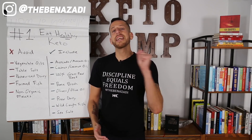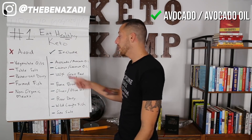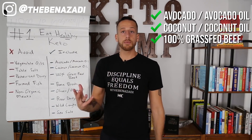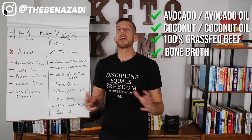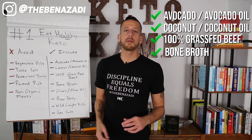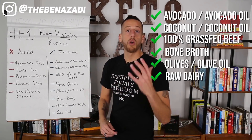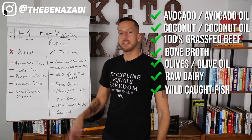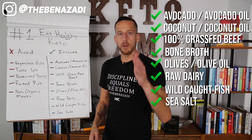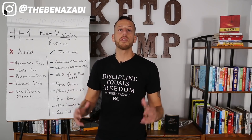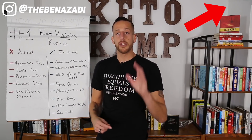On the clean keto side, we want to be eating avocados and avocado oil, coconut and coconut oil, 100% grass-fed beef, bone broth, olives and olive oil, raw dairy, wild-caught fish, and sea salt. There's a bunch more I could add to this list — explore the videos on this channel for more, and I'll put a few videos in the cards.